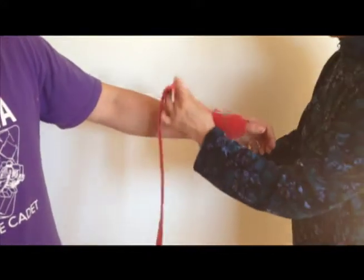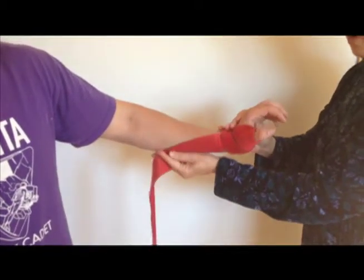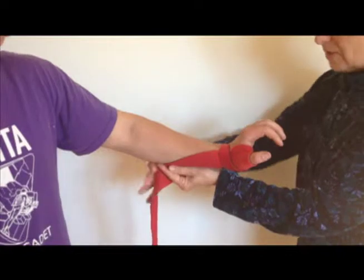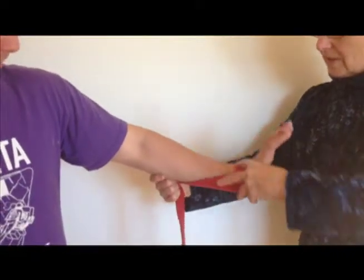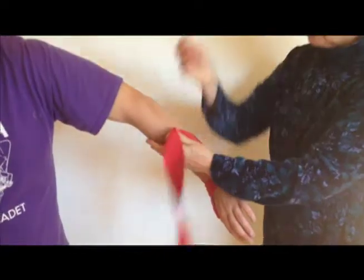I'm pulling on the back of the hand to assist with wrist extension. I'm going to put Bernard in his end range of pronation and wrap one time around his forearm.